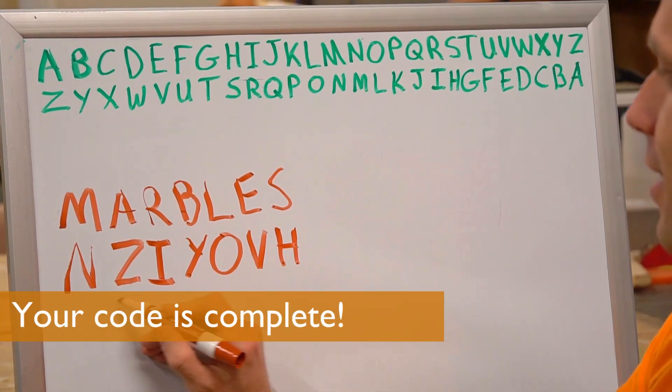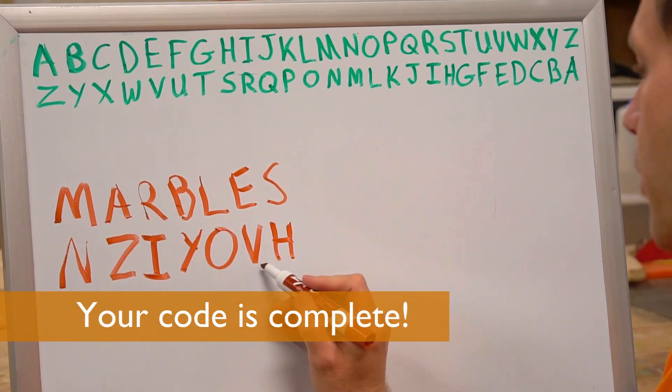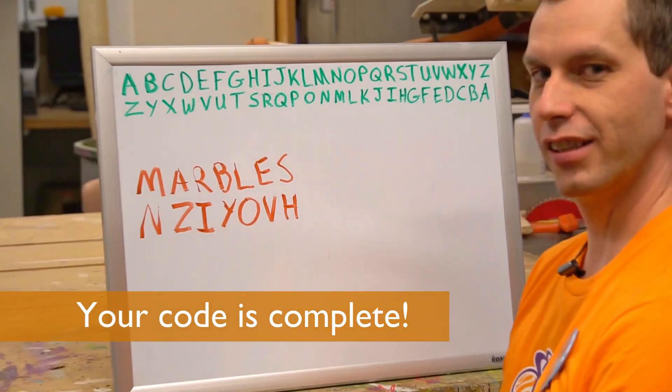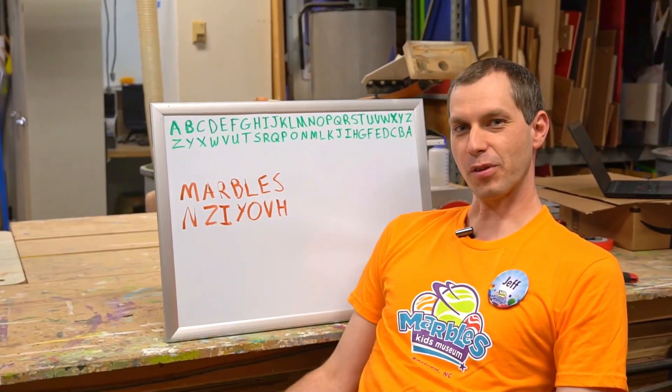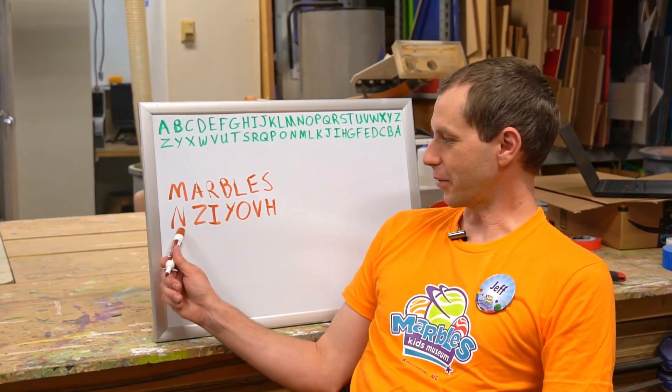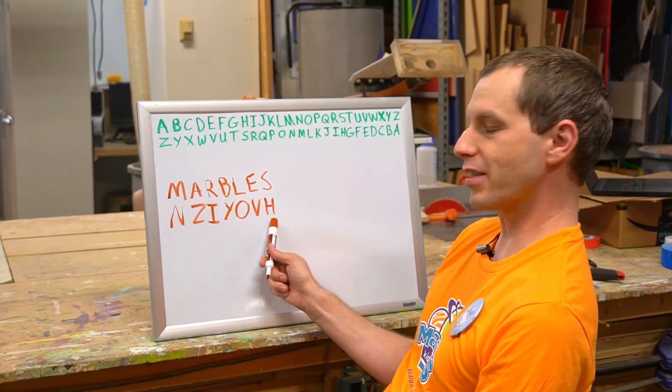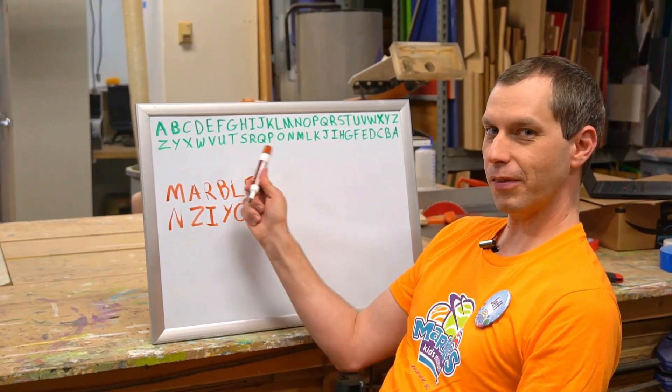So marbles is N, Z, I, Y, O, V, H. Sounds like gibberish, right? But in fact, it's the code. So this new word here means marbles, but you can only read it if you have the key.